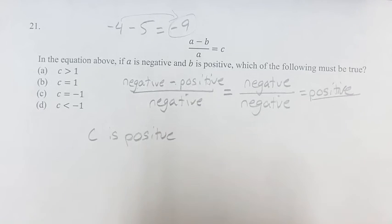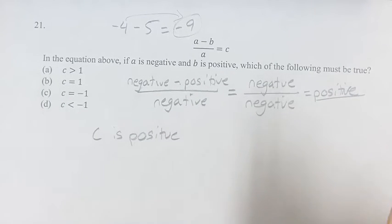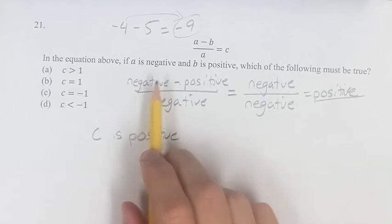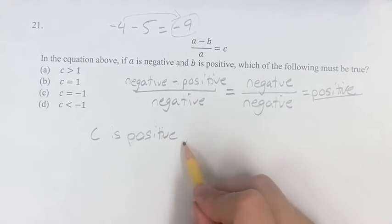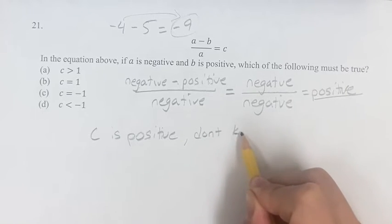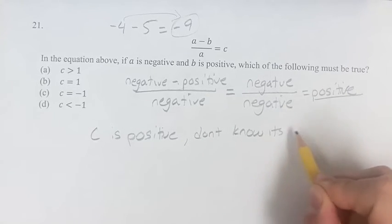But we don't know whether it is a specific, we don't know its exact value. We would have to know what a is and what b is to find that. So, c is positive. Don't know its exact value.